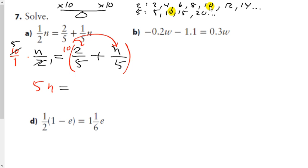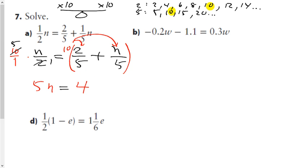The next part: 10 multiplied by 2/5 is 20 over 5, which equals 4 — and cross-reducing also gives 4. Then 10 multiplied by n over 5 is 10n over 5, which equals 2n. So on the right side we have 4 plus 2n.